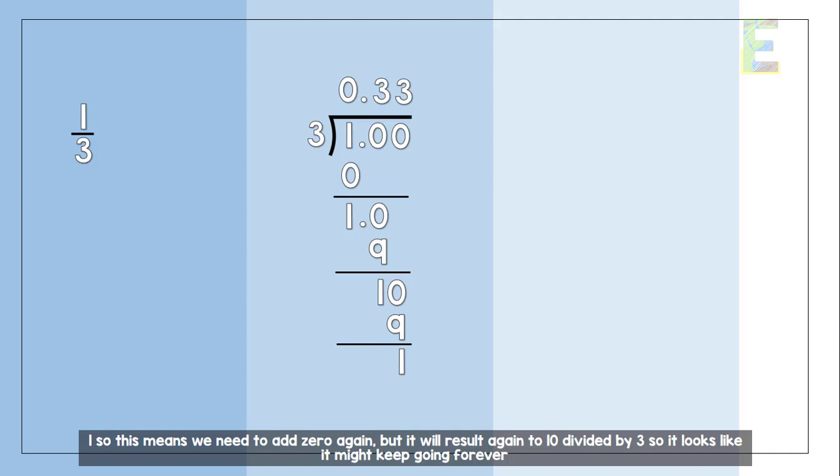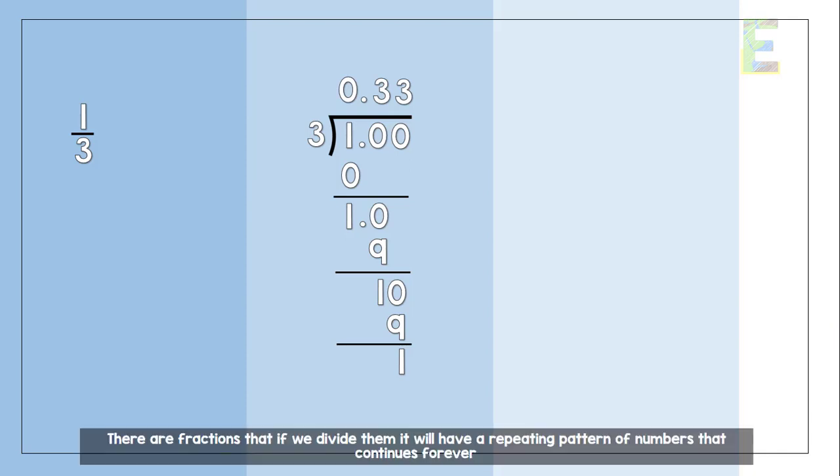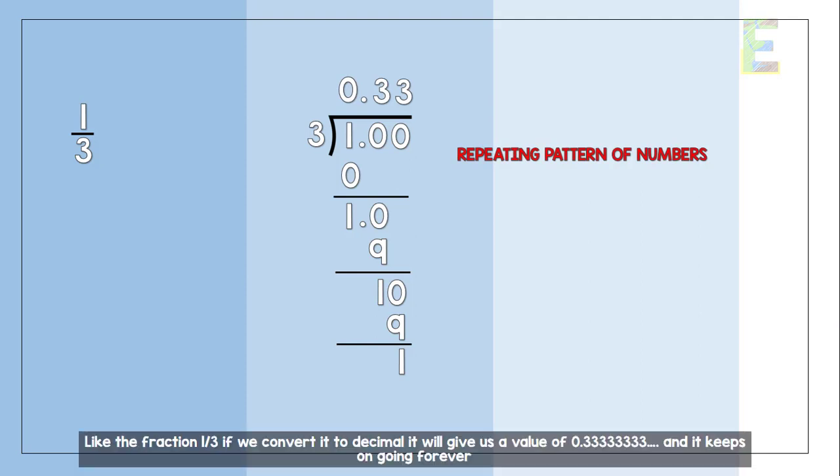So, it looks like it might keep going forever. There are fractions that if we divide them, we'll have a repeating pattern of numbers that continues forever. Like the fraction 1 over 3.